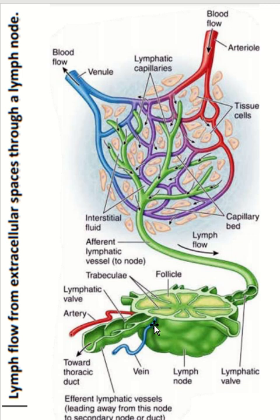The lymph node also contains follicular dendritic cells, which retain and present antigen on their surface to B cells within the germinal center, crucial for B cell activation and maturation. It also contains plasma cells — differentiated B cells — that secrete large quantities of antibody. It also contains memory cells: long-lived cells derived from B and T cells that remember specific antigens and create a faster response upon re-exposure.